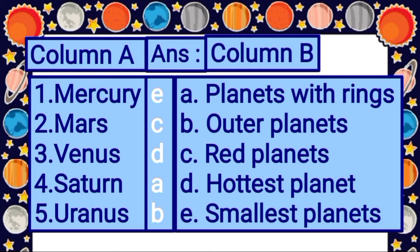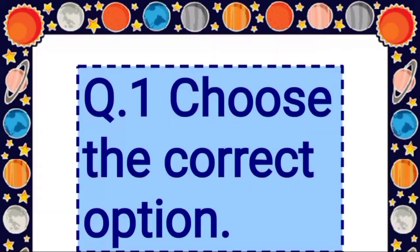Fifth question from column A is Uranus. As you know, Uranus and Neptune are farthest from the sun, and together with Jupiter and Saturn, they are also called outer planets. So for Uranus, the answer is option B: outer planets.